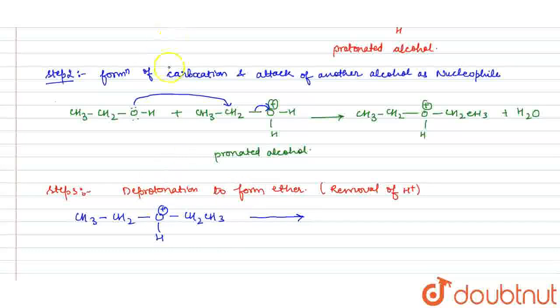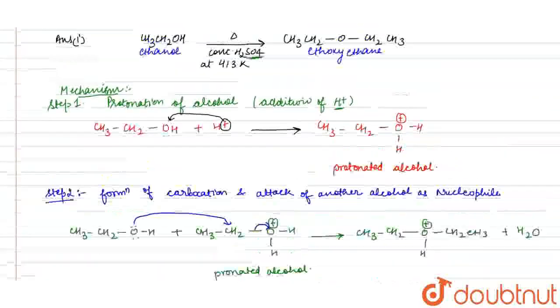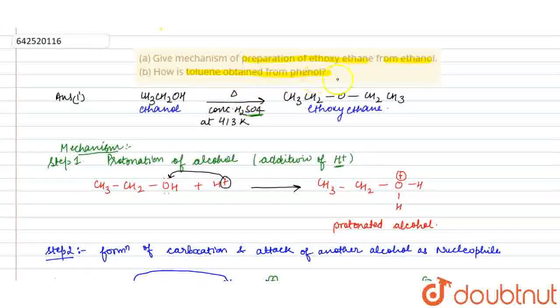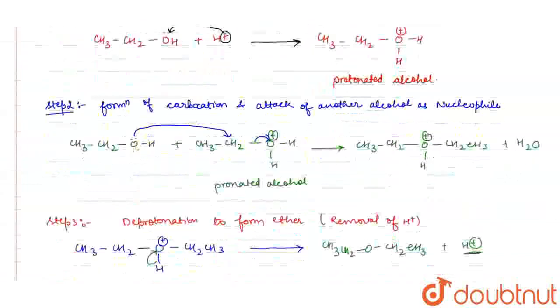In this process, catalysts are used to carry out the reaction. Here the catalyst is H-positive ion. Now comes to the second question: how is toluene obtained from phenol? We will see the reaction.